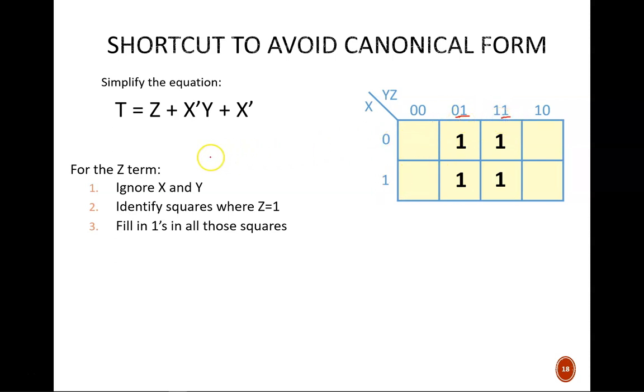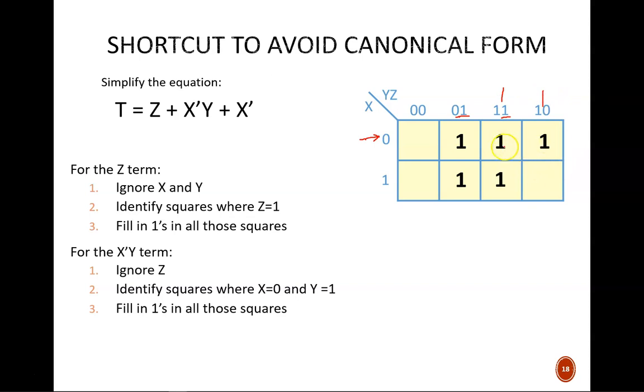Now for the X'Y term. Here Z does not matter and we look for the squares where X equals 0 and Y equals 1. X is 0 along this top row, and Y is 1 in these two columns. So these two squares receive a 1. We already have a 1 filled into this square from the previous product term. That's fine, it just remains a 1. There's no such thing as extra true.